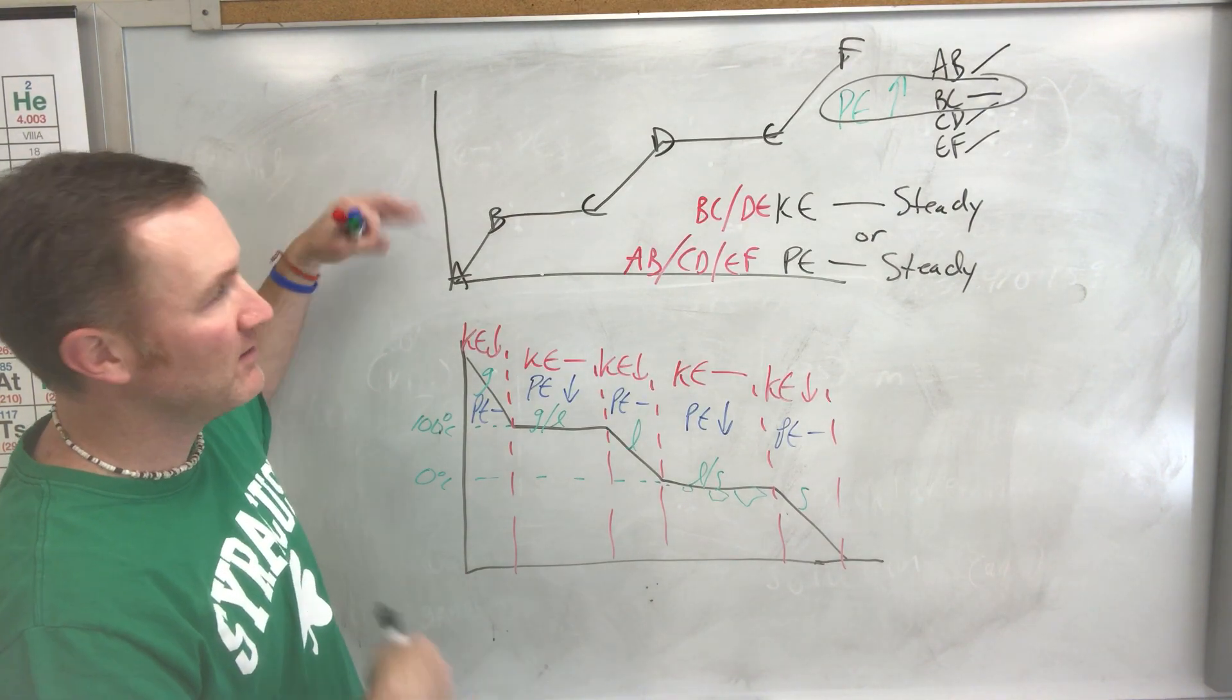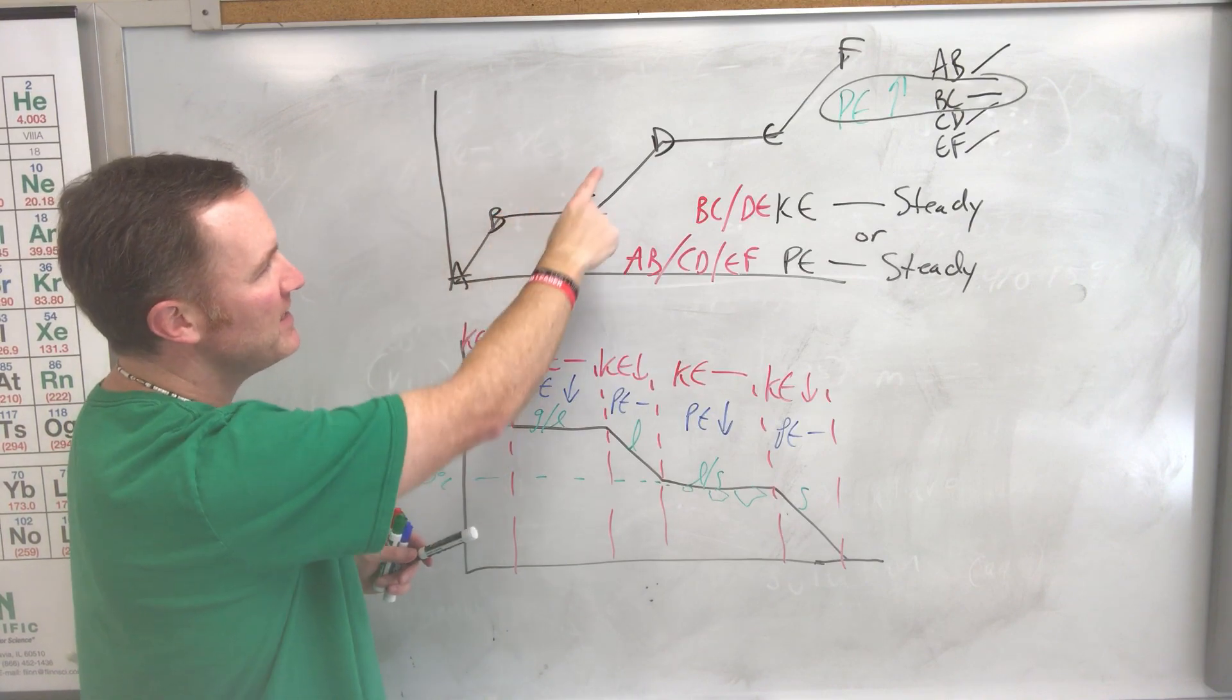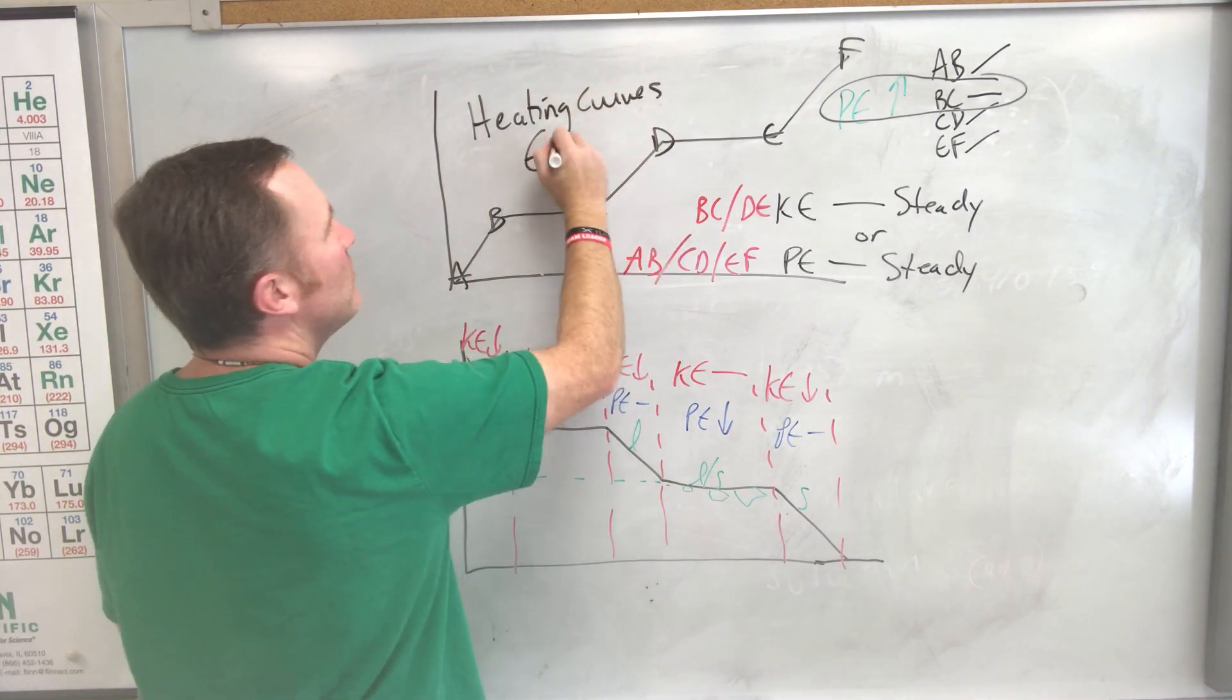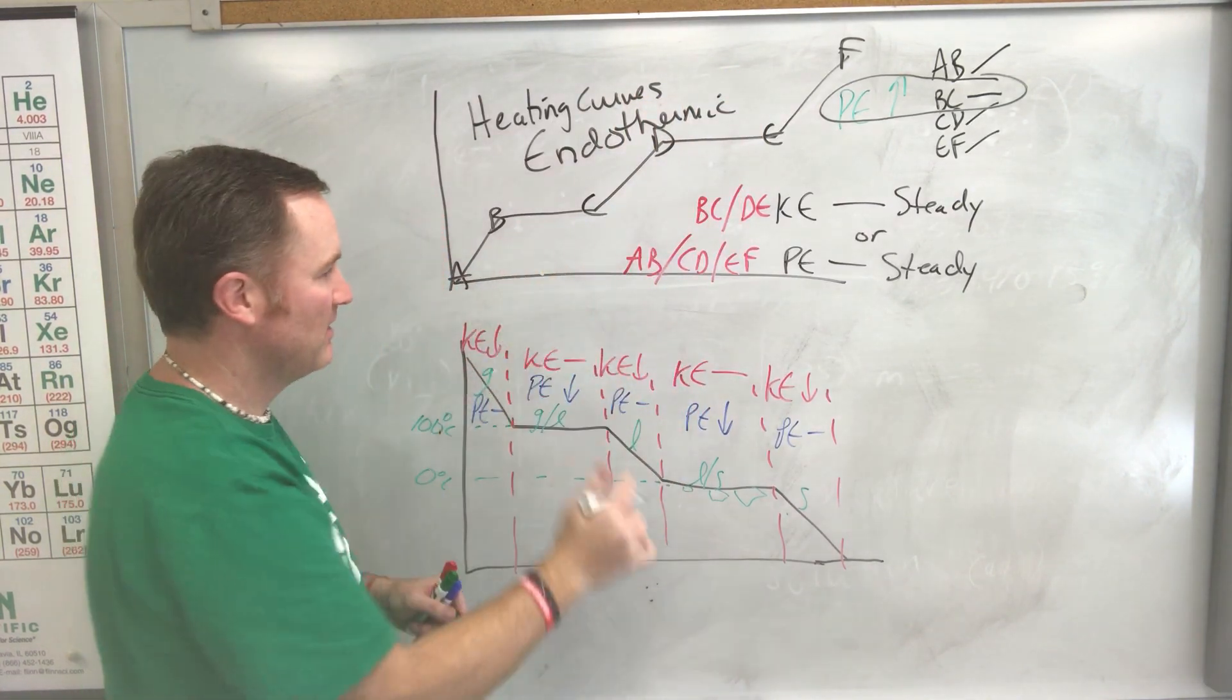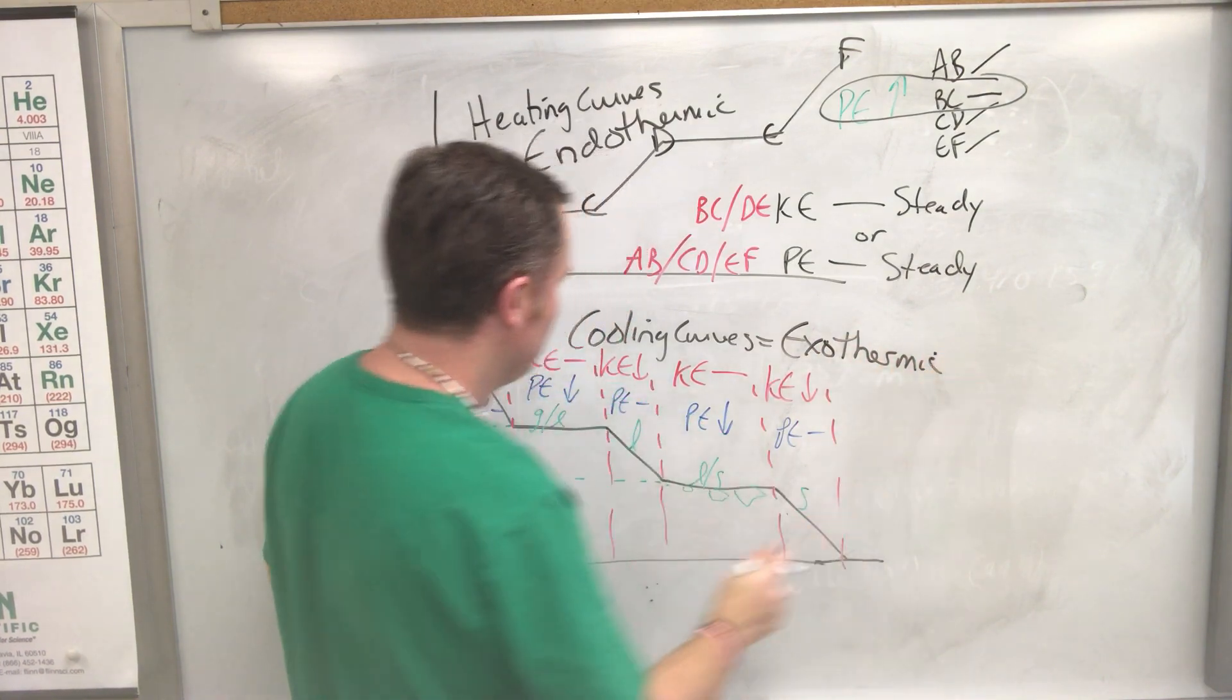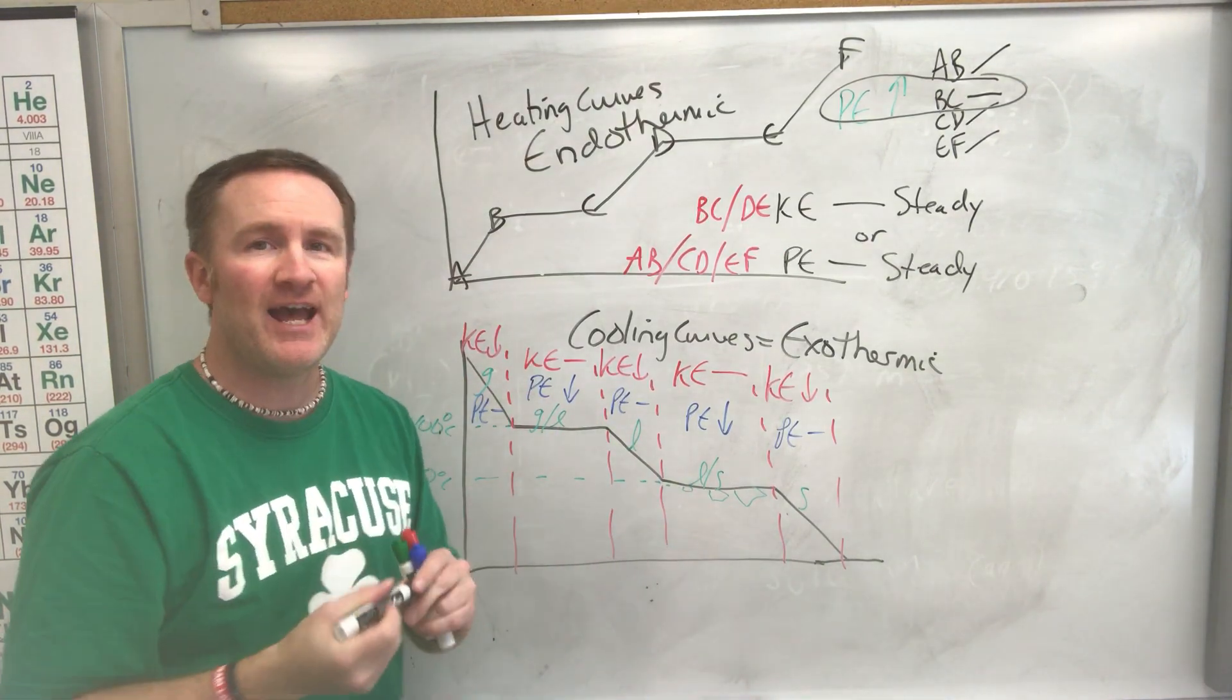And so just to remember and kind of going off that same thing as we wrap this video up, this right here, in order to do this energy had to go in, so I had to put energy in to melt the ice and to also boil the water. So heating curves are endothermic, energy had to go in. Where cooling curves are exothermic, that gas had to lose heat to condense back down into water, the water had to lose heat in order to freeze.